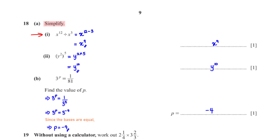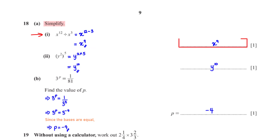Since the terms have the same base and are dividing, their powers subtract. So we have x raised to the power 12 minus 3, which equals x raised to the power 9.